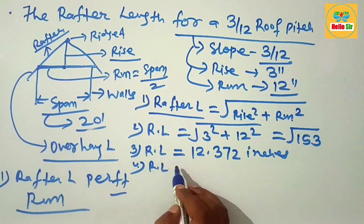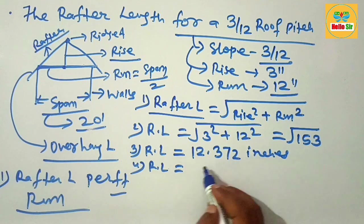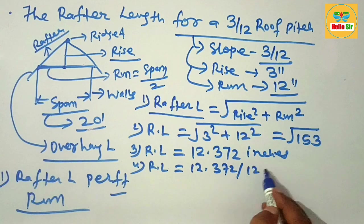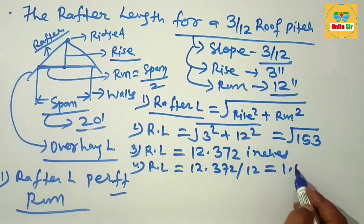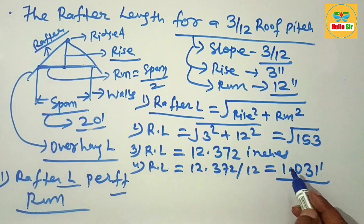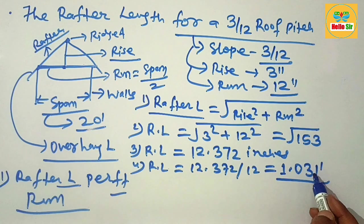If you convert this rafter length to feet, you divide by 12: 12.372 divided by 12 equals 1.031 feet. This is the rafter length per foot of run, meaning the rafter length will be 1.031 feet for a 3 by 12 roof pitch.